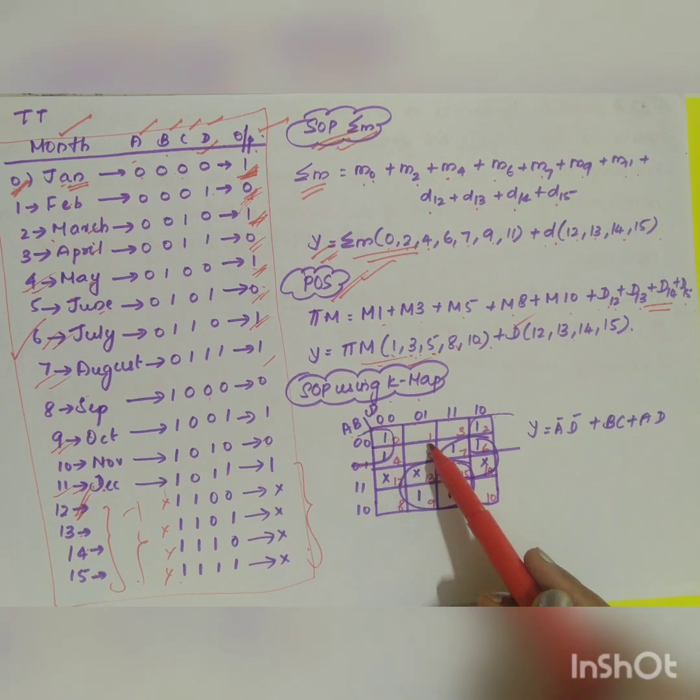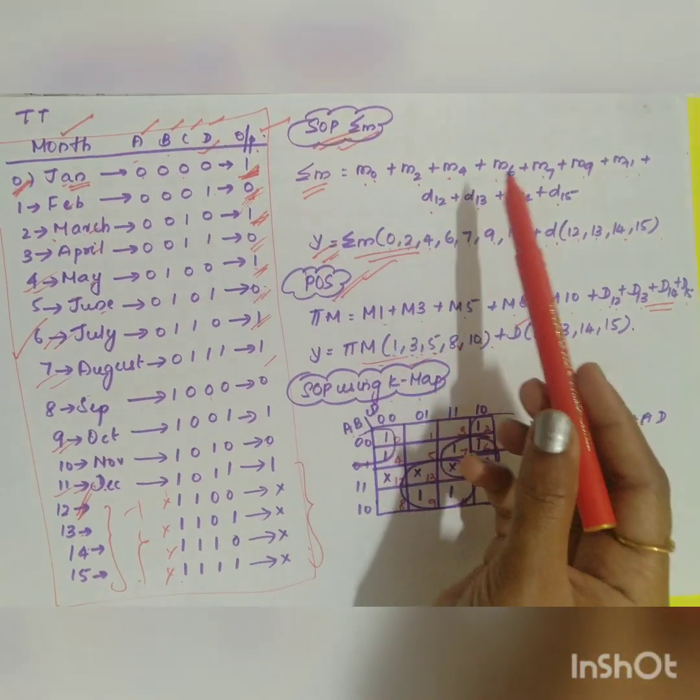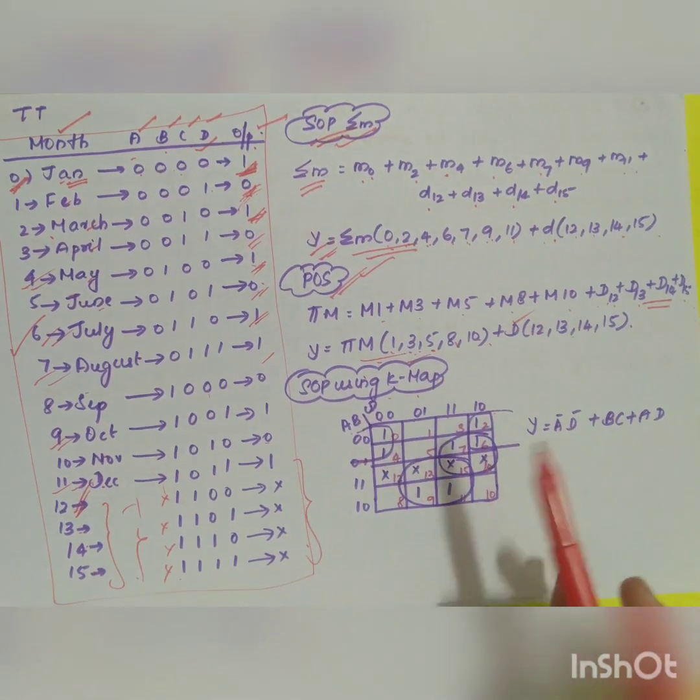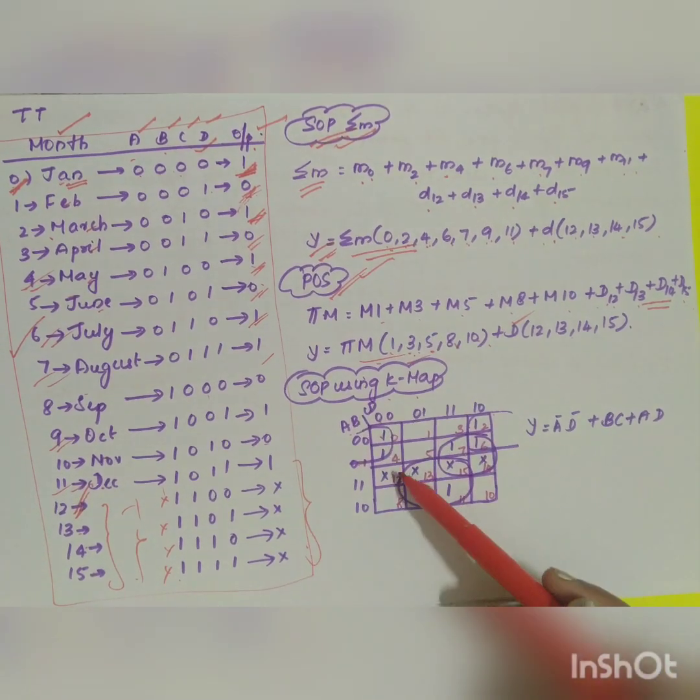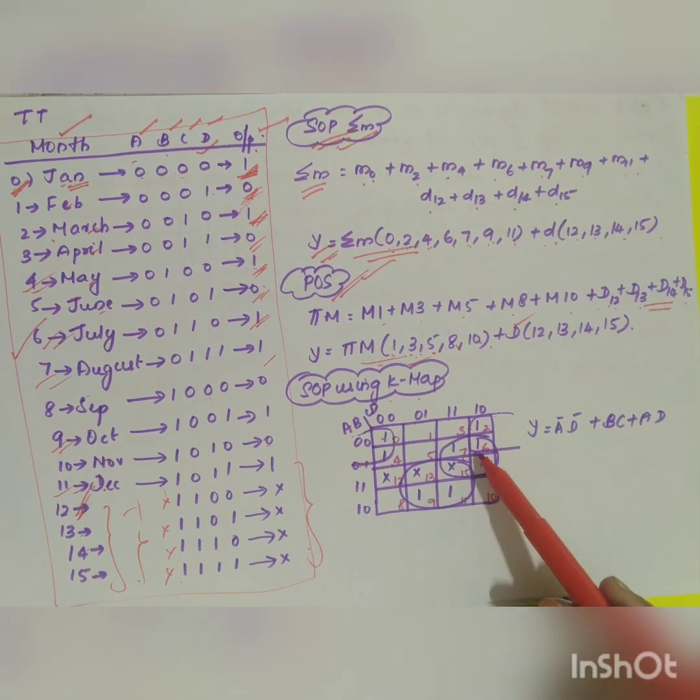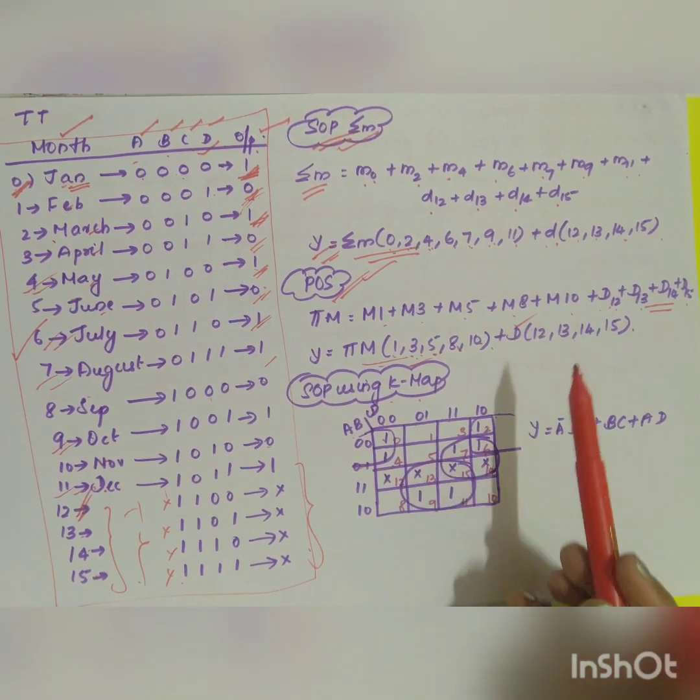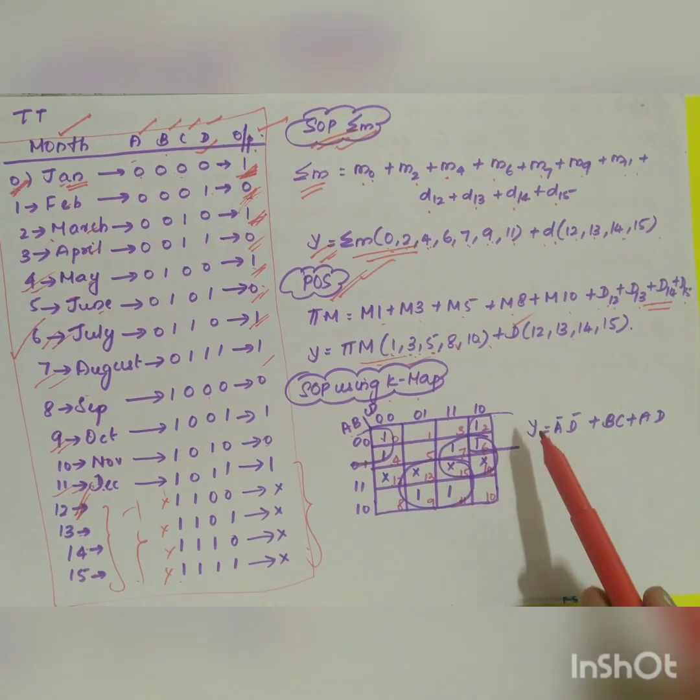So your min terms are 0, 1, 2, 3, 4, 5, 6, 7. So wherever you have 1: 0, 2, 4, 6, 7, 9, 11 you have 1. So 0 you have 1, then you have for 2 you have 1, then for 4, 7, 6, 9, 11 you have 1. And don't care is 12, 13, 14, 15. So 12, 13, 14, 15.